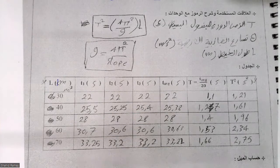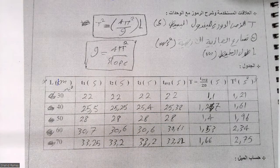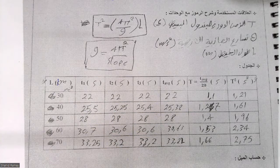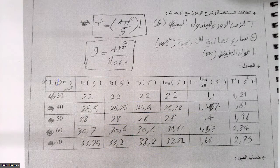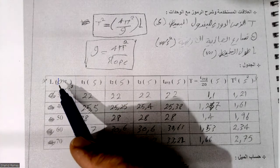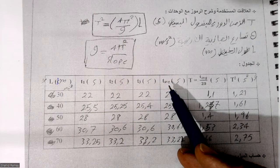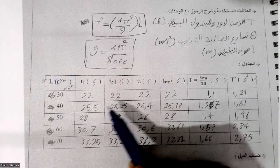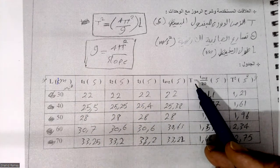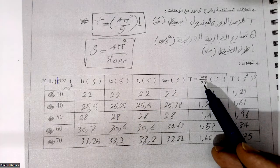Bismillah. Assalamu alaikum students. Today we will draw the graph of the simple pendulum experiment. In this experiment you have already taken data between length and time period. The length was measured in centimeters but we convert it to meters. We recorded the time three times and divided by three to get T average, then divided by the number of vibrations — which is 20 — to get the time period.